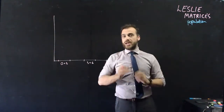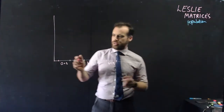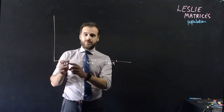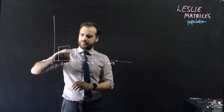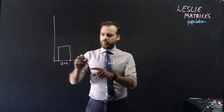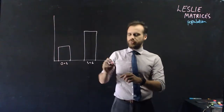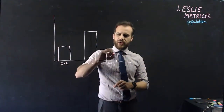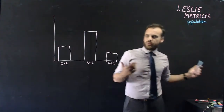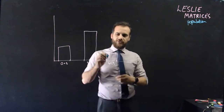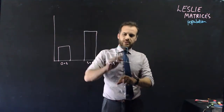A population age distribution is a very interesting and important idea. Let's say we've got zero to three-year-olds — these might be some sort of animals in the bush, kangaroos or something — and we have this many. We have way more three to six-year-old kangaroos, and we only have a few of the older, six to nine-year-old kangaroos. Now, fast forward three years, and we might have a very different story — a much older population of kangaroos, living much longer.